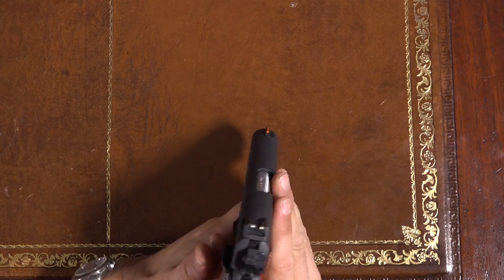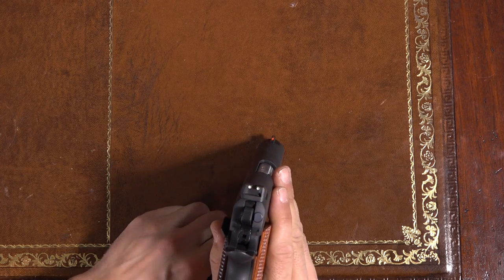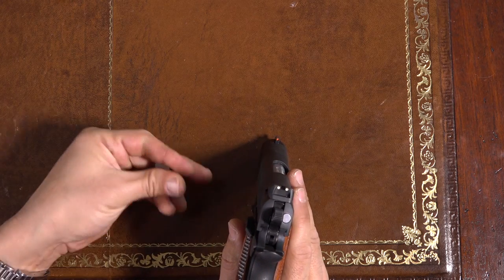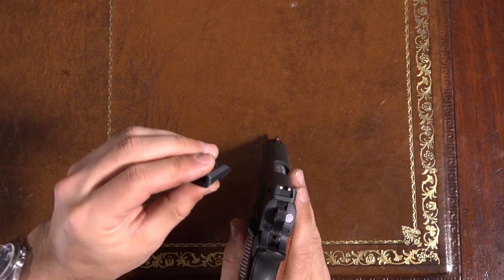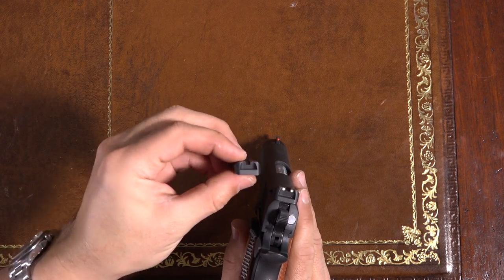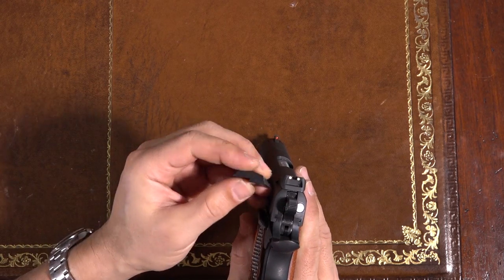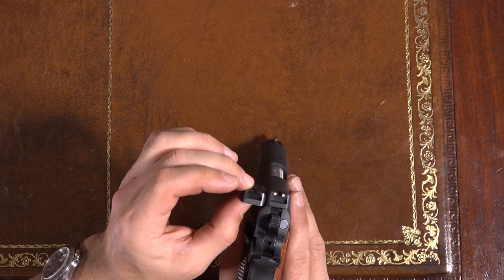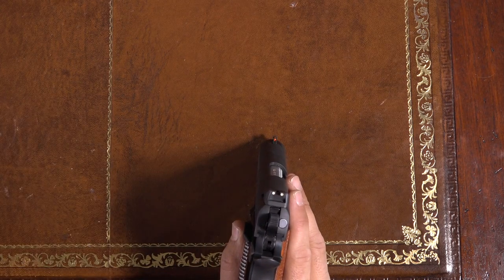And the sights are set up for a six o'clock hold. I don't like six o'clock hold. I prefer point of aim, point of impact. So I will be swapping this rear sight out. I happen to have another Novak sight lying around. It doesn't have the dots. It's not a big deal. I don't really use the rear dots. But this should lower it just enough for me to get it to a hold that I prefer.